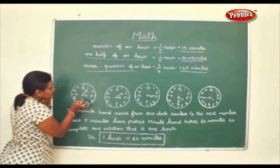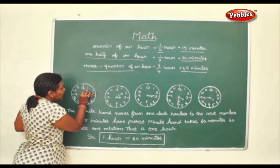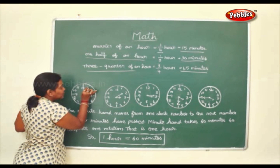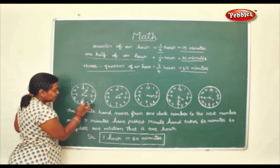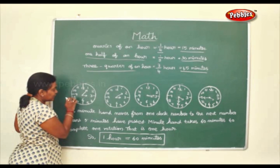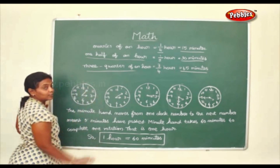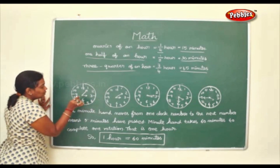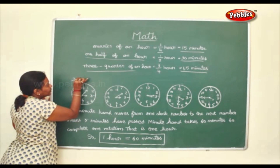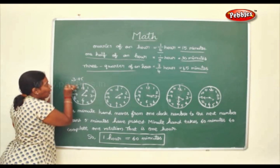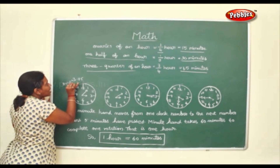Here the short hand is at three and the long hand is at one, which means five minutes. Counting by fives: 5, 10, 15, 20, 25, 30, 35, 40, 45, 50, 55 — one hour gets completed. So here you can write this as 3:05, or five minutes past three.